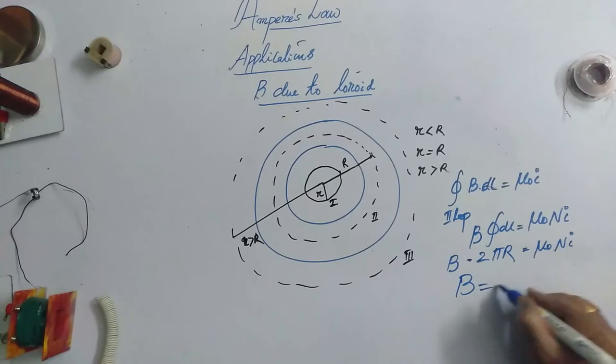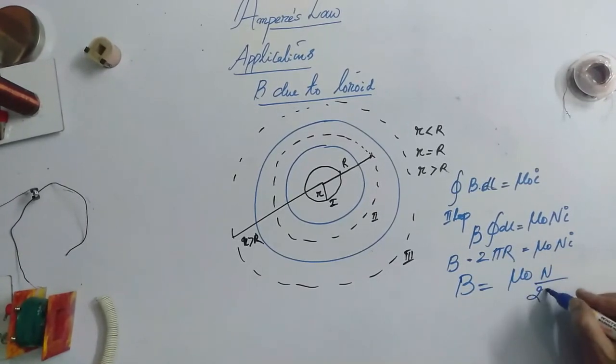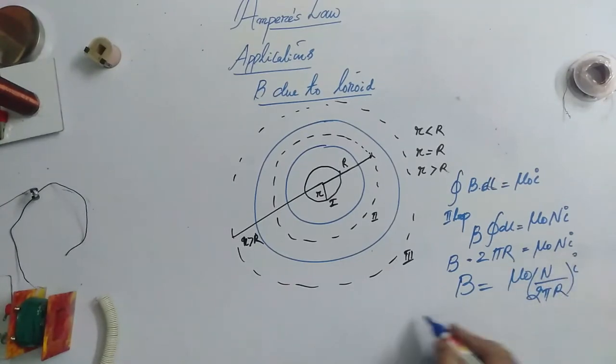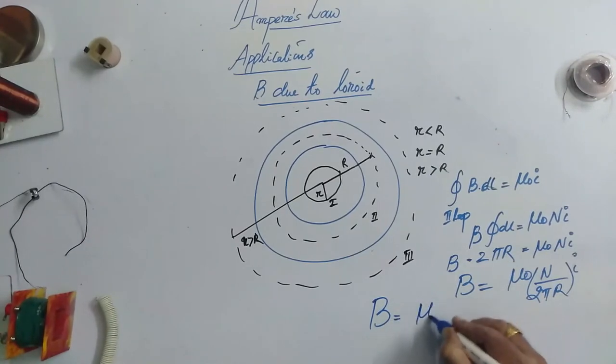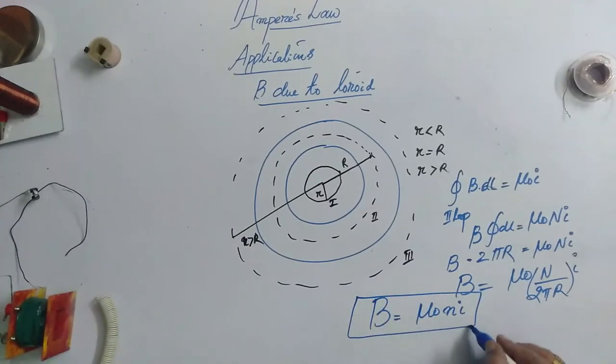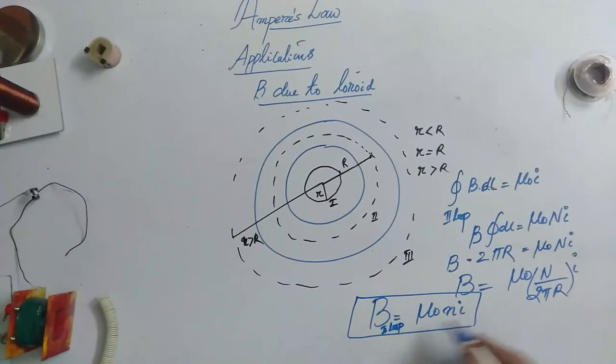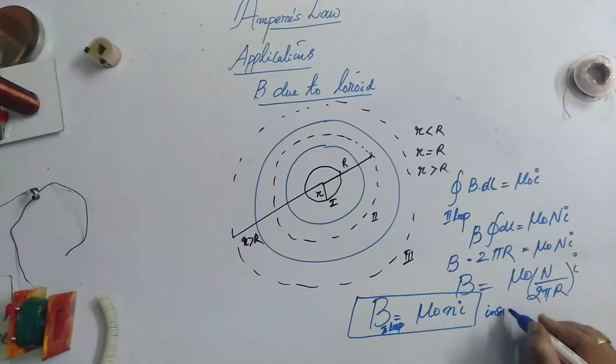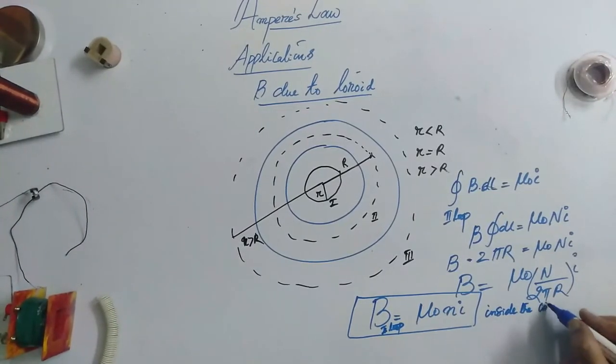Now, I wanted to know B. Therefore, mu naught n by 2 pi r times i. So, we can consider again, this is number of turns per unit length. Therefore, B is equal to mu naught times of n i. So, this is in the second loop. Second loop means which is inside the windings of solenoid.